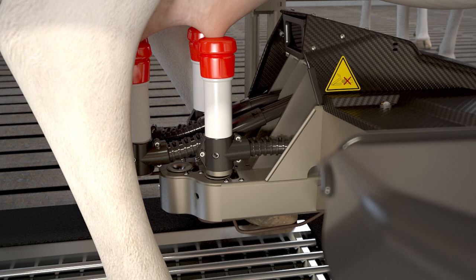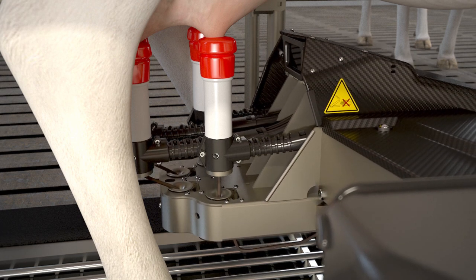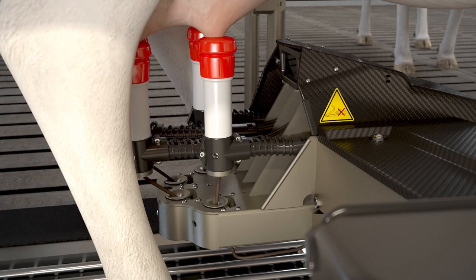Because the tubes are incorporated into the robot arm, the cow cannot step on them, reducing the risk of the milking process being disturbed.